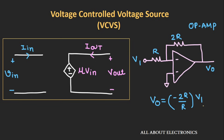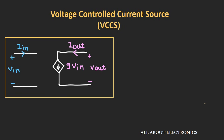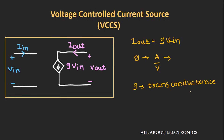The fourth kind of source is the voltage-controlled current source, where voltage is the controlling element which controls the output current. The output current Iout can be given as G×Vin, where Vin is the input voltage that controls the current source. Here G is the coefficient of this current source, with a unit of amperes per volt — or we can say it has units of conductance. Sometimes the coefficient G is also known as the transconductance of this current source.